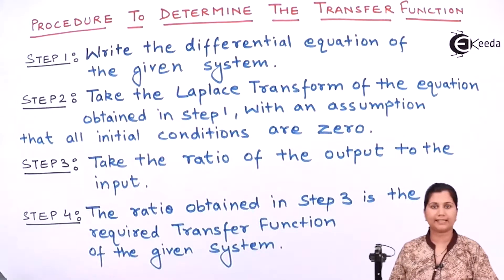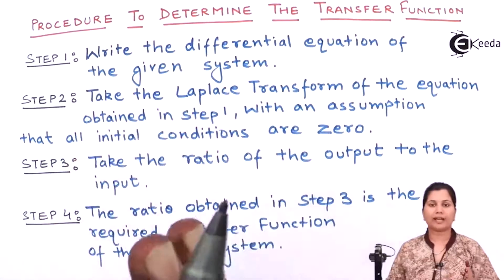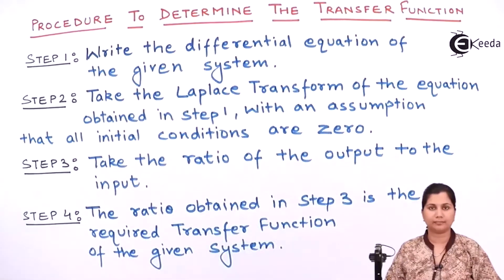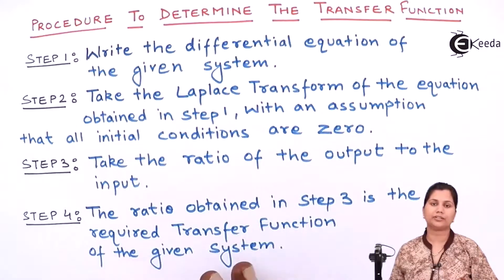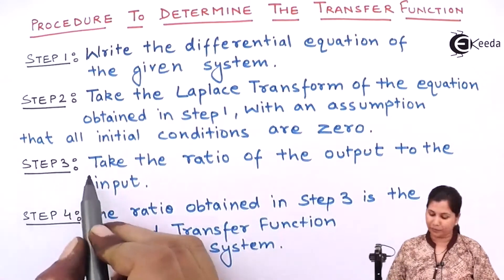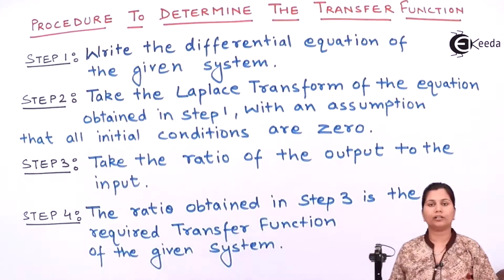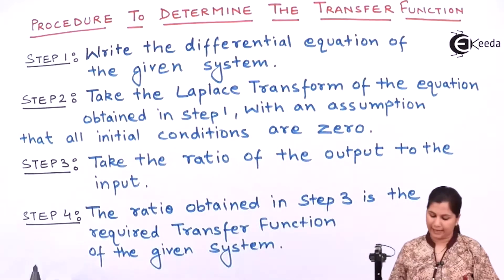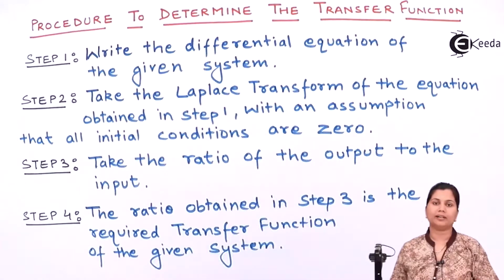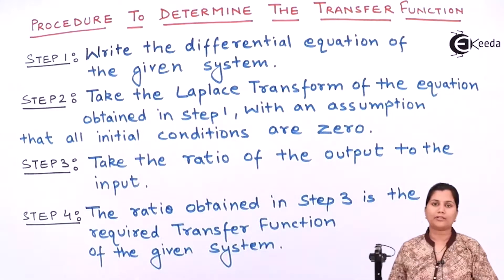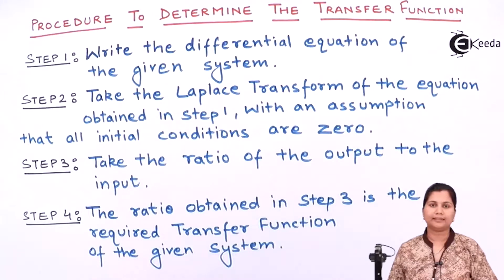Let's summarize these steps. In the first step, write the differential equation of the system. In the second step, take the Laplace transform of the equation and take the assumption that all the initial conditions are zero. In step three, take the ratio of the output to the input, and in step four, the ratio which you have obtained will be the required transfer function of the given system. I hope that you have understood the topic clearly. Thank you.